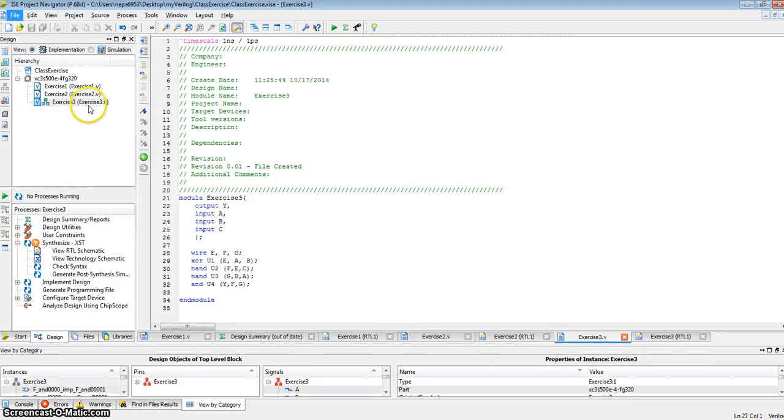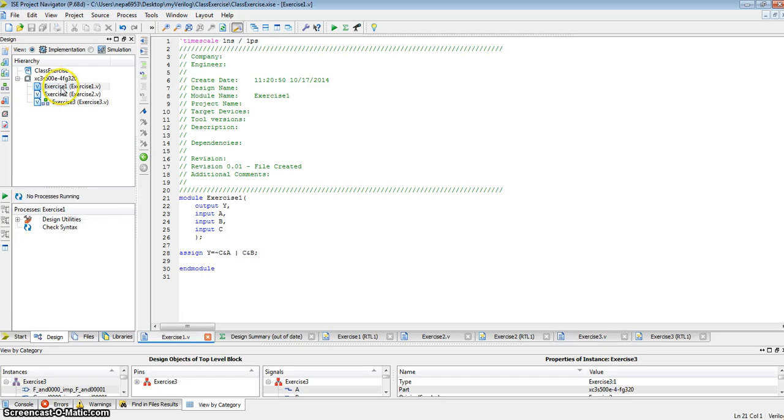So far, we've created three modules in Verilog. Exercise one was a data flow model that described Y, the Boolean expression for Y, as not C and A, or C and B.